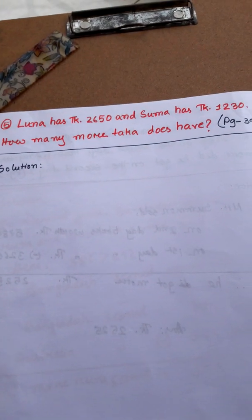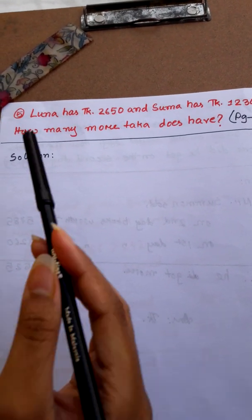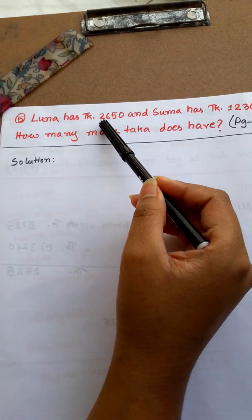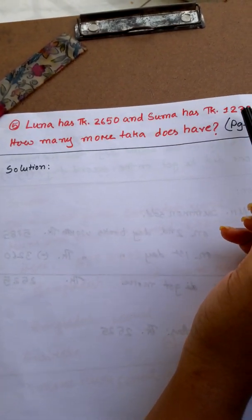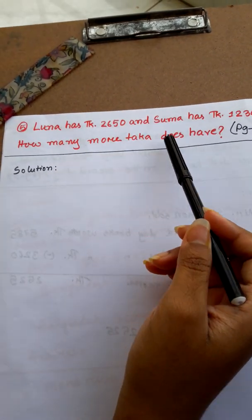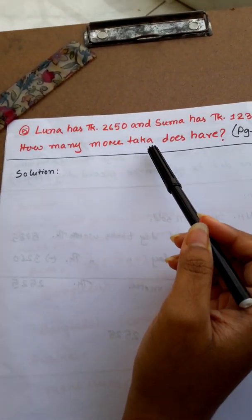Next math, number 5. Luna has Taka 2,650 and Suma has Taka 1,230. How many more Taka does Luna have?